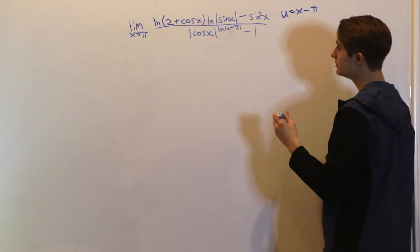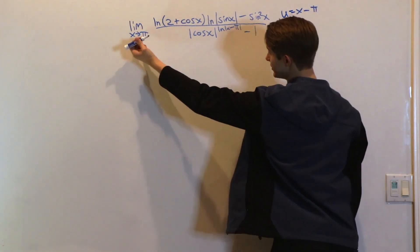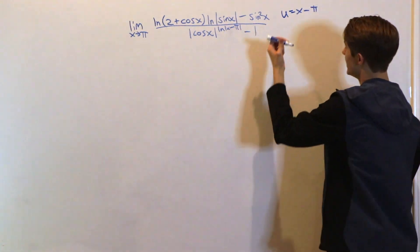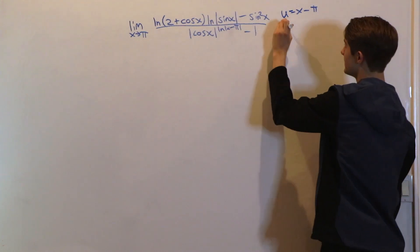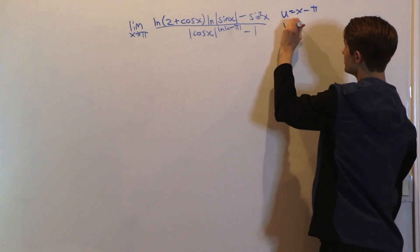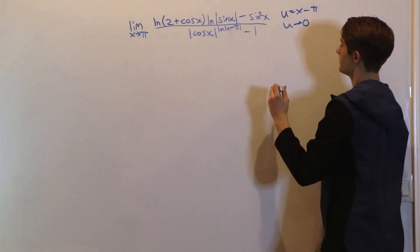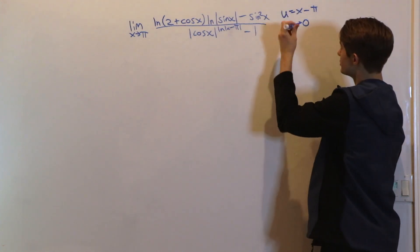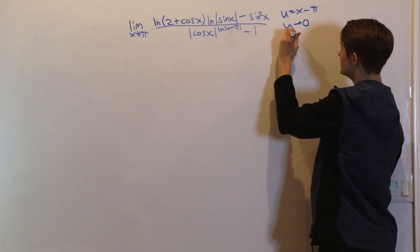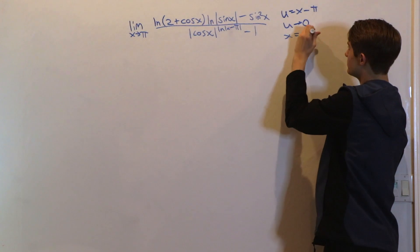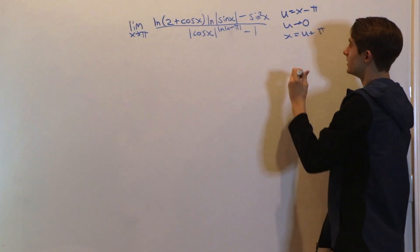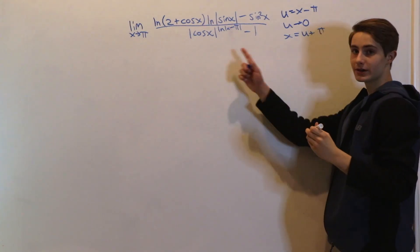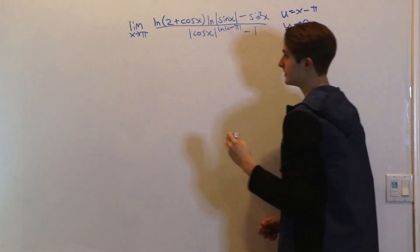If we do this, then as x approaches π, u will approach π - π, which means it will approach zero. This also means that x = u + π, and now we can plug this into our limit.